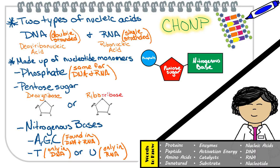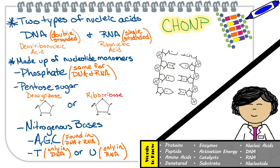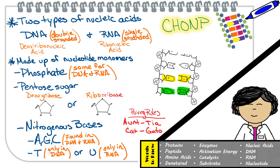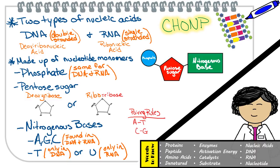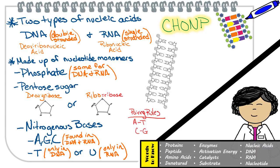We often use the first letter of the nitrogenous bases to identify which type it is. You also need to know the way nitrogenous bases like to pair: A pairs with T, and C pairs with G. We're going to get into much more detail in later lectures regarding DNA replication and protein synthesis. For now, just be sure to know what a nucleotide monomer looks like.